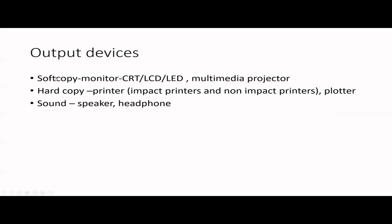Then we have output devices. When it comes to output devices, we can divide them into soft copy providing, hard copy providing, and sound related output devices. Soft copy means your output is not touchable — it's intangible. For example, the monitor's output you can see but cannot touch. When it comes to monitors, we have CRT, LCD, and LED monitors, and also projectors — overhead projectors, slide projectors, and multimedia projectors, which we discussed in grade 11. Hard copy output is like paper output where you can touch it — printers and plotters come under that. For printers, we have impact and non-impact printers; you should know which is noisier and more costly. Under sound output, you can think of speakers and headphones.